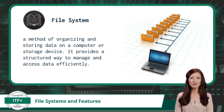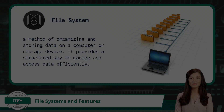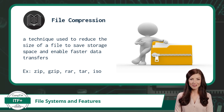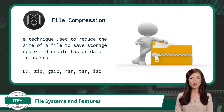Let's explore some key features offered by various file systems. The first feature is file compression — the process of reducing the size of a file to save storage space and enable faster data transfers. This sounds like a great solution if you are running out of storage space on your workstation or server.